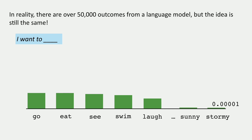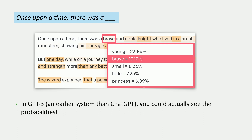Unfortunately it's hard to explore these probabilities in the current ChatGPT system. But there was an earlier system called GPT-3, the predecessor to ChatGPT, where you could actually see what probabilities the model was using. If you put in 'once upon a time, there was a blank' and asked for the probabilities, it would give a 23.86% chance of 'young,' 10% chance of 'brave,' and 8% chance of 'small.' All of these lead to plausible story continuations. Note we're only showing five options so they sum to less than 100%, but the model only shows the top five.